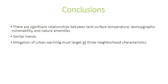In conclusion, there are significant relationships between land surface temperature, demographic vulnerability, and nature amenities. There also seem to be similar spatial trends where the most vulnerable characteristics are concentrated in the center of the metro area compared to the outer suburban areas. Lastly, mitigation of urban warming must target all three neighborhood characteristics.